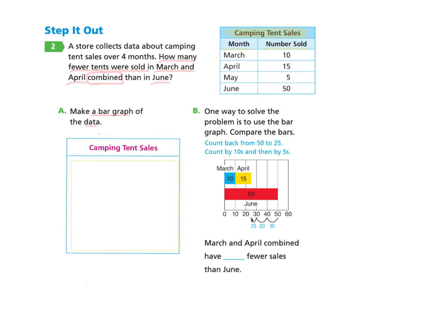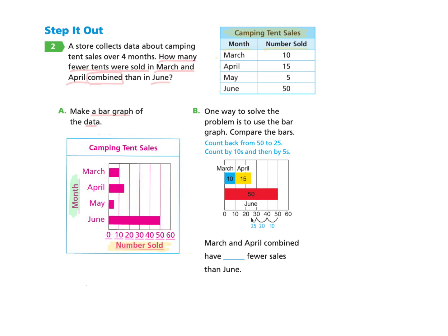First, we make a title for camping tent sales. Then we write the number sold on the bottom — from zero to 60, increasing by 10. On the other side, we put the months: June, May, April, and March. Using these labels, we make the bar graph: March has 10, April has 15, May has 5, and June has 50. In April, the bar goes halfway between 10 and 20, representing 15. In May, it goes halfway between 0 and 10, which is 5.